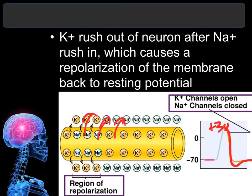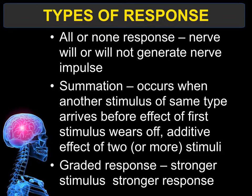There are different types of responses. The most common is the all-or-none response, which means there will either be a nerve impulse traveling down the axon or there won't be. If the charge does not reach plus 30 millivolts, there will be no nerve impulse. It has to reach plus 30 for anything to happen — that is all or none.